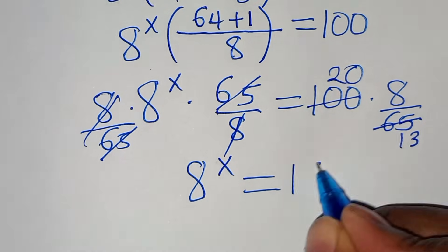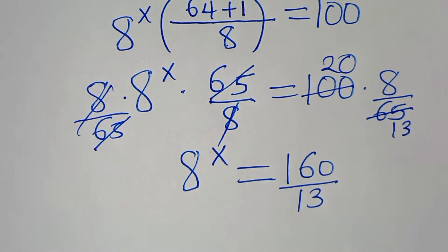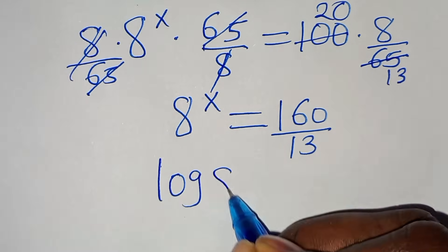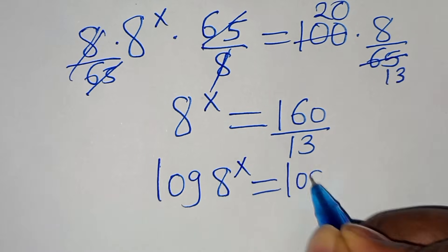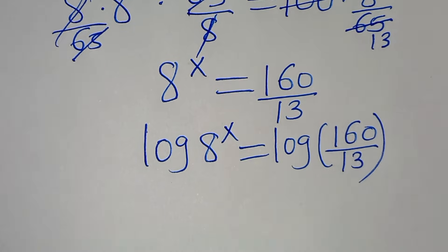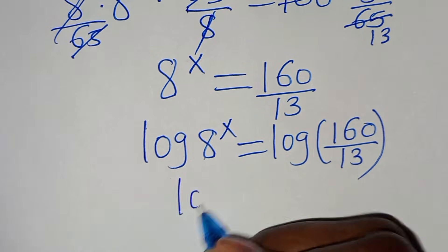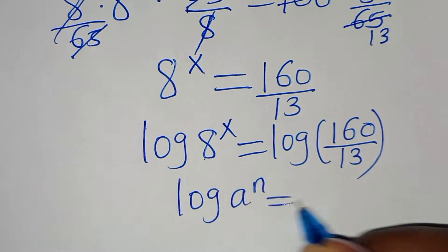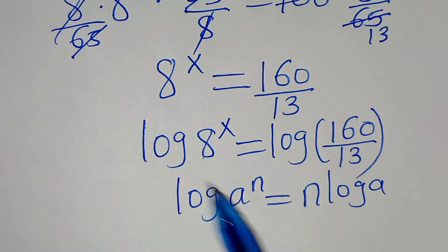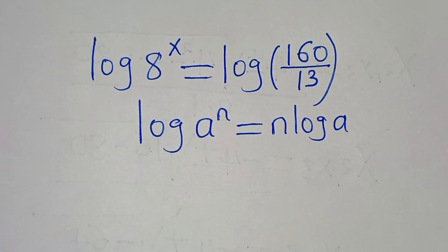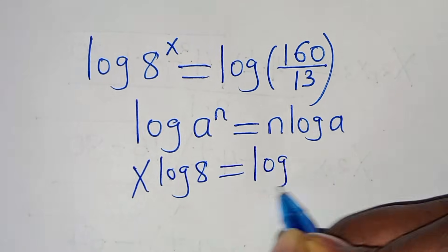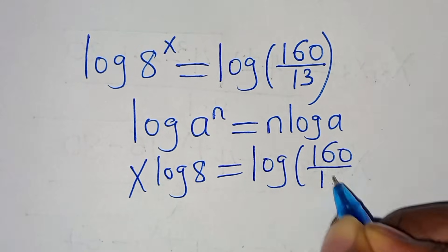To solve for x, we introduce logarithms on both sides. We have 8^x = 160/13. Since 8^x is in the form a^x, applying the power property of logarithms gives x·log(8) = log(160/13).